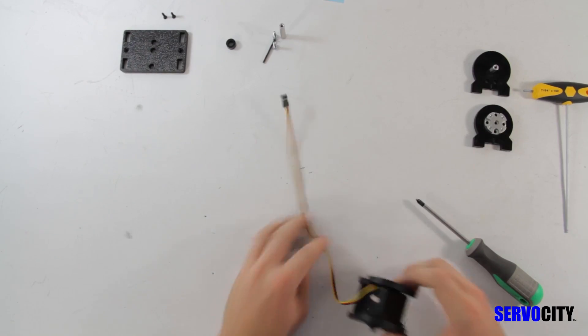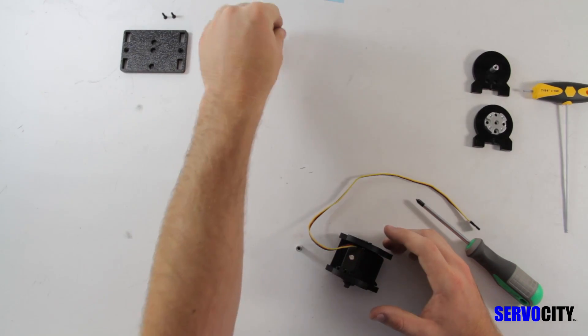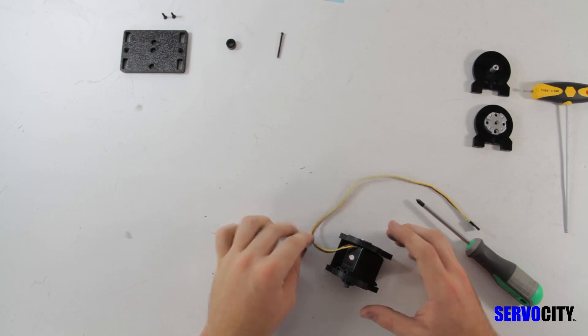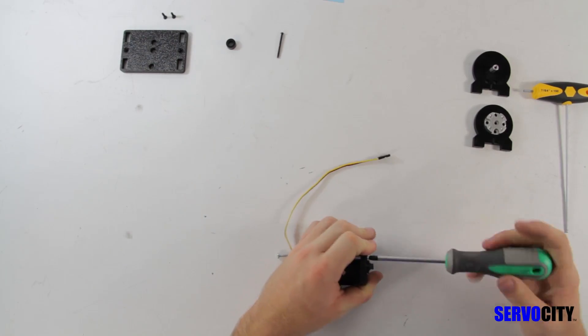Next, you need the 1.5 inch round standoff and two of the 1.5 inch pan head screws. Secure the standoff in between the two upright plates using the screws.